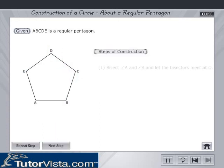Steps of construction: Bisect angle A and angle B and let the bisectors meet at O.